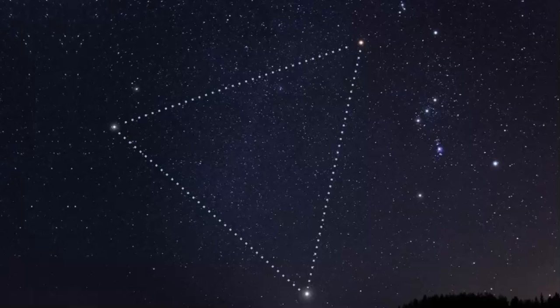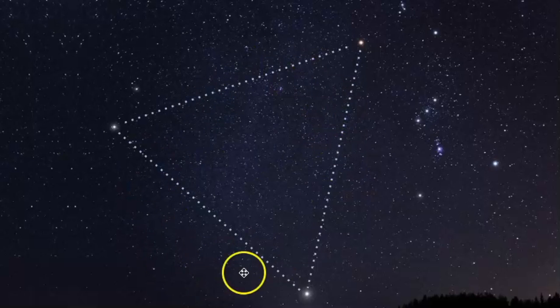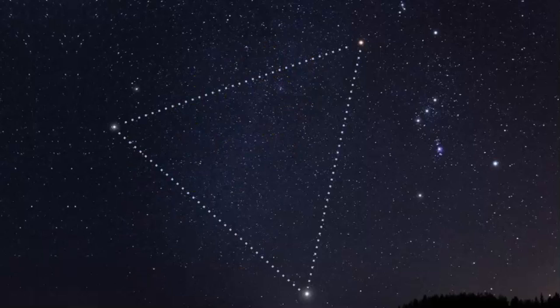Another interesting fact is that the constellation Monoceros is kind of right in the middle here. It's very difficult to make out a pattern of Monoceros, but I've got a whole video on that, so if you want to learn more, go see that video.